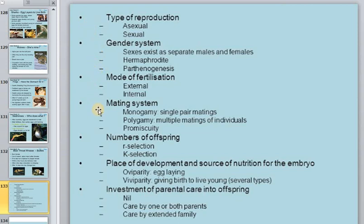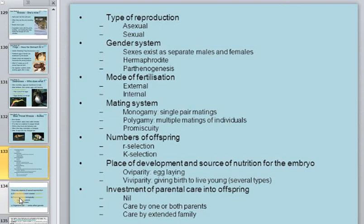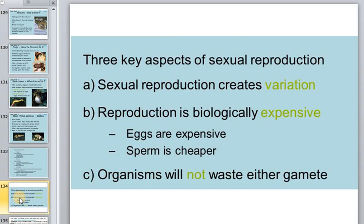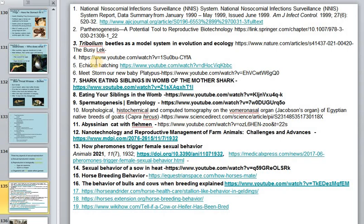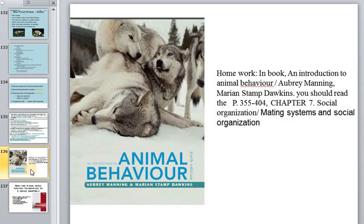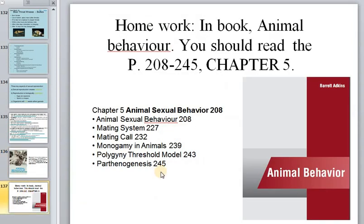Today we discussed types of reproduction, mating systems, fertilization, and estrous cycles in general. Next time we will discuss how animals give birth and how they care for their offspring. Homework: read Chapter 7 on social organization and mating systems, and Chapter 5 on sexual behavior, mating calls, monogamous animals, polygyny, and parthenogenesis from the animal behavior textbook. See you later!